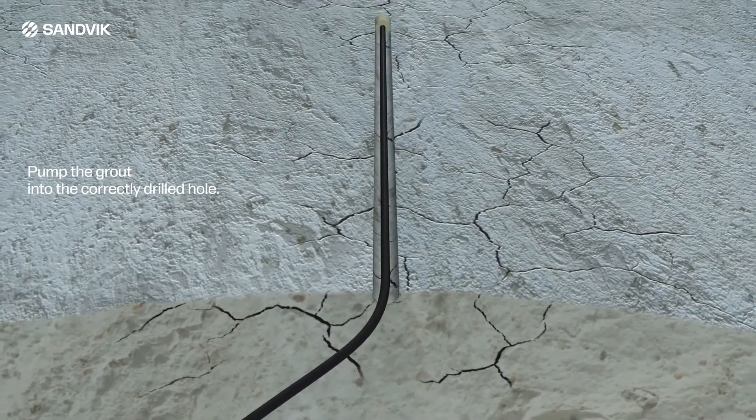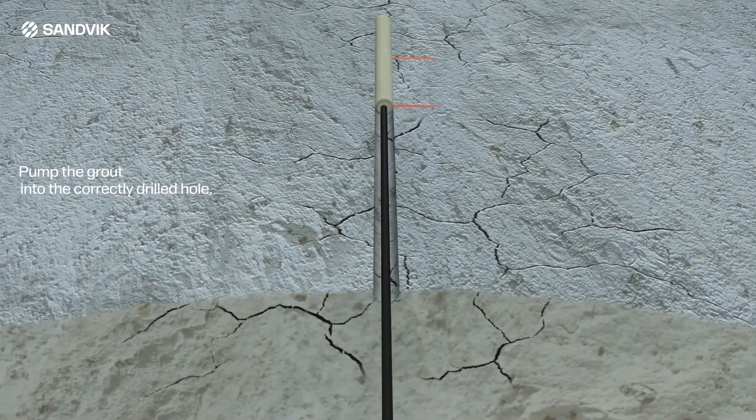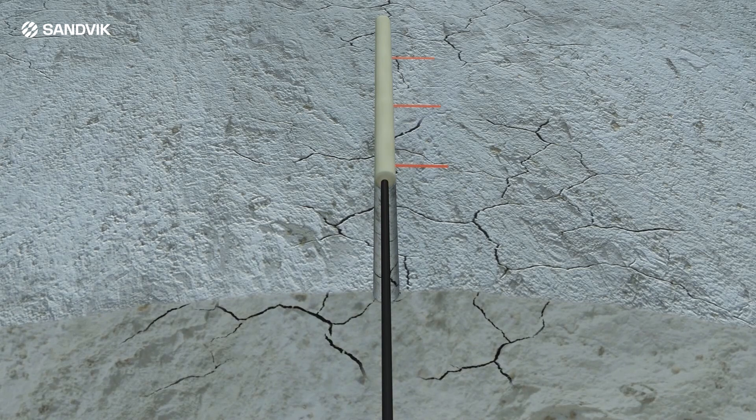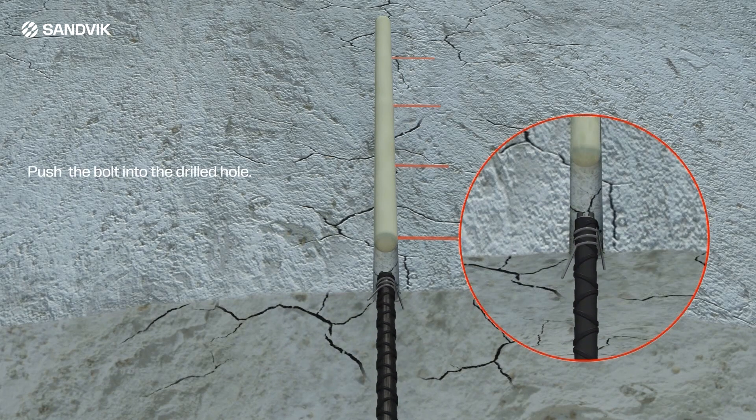Pump the grout into the correctly drilled hole. Push the bolt into the drilled hole.